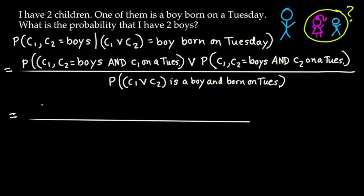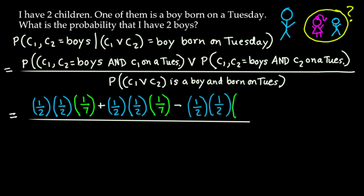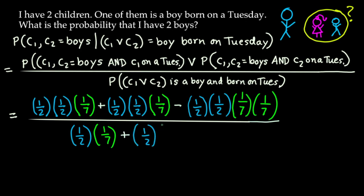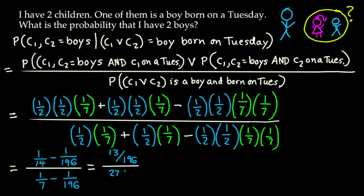The numerator: P(C1 is a boy) × P(C2 is a boy) × P(C1 born on Tuesday) = 1/2 × 1/2 × 1/7, plus the same 1/2 × 1/2 × 1/7, minus P(both boys and both born on Tuesday) = 1/2 × 1/2 × 1/7 × 1/7. The denominator: P(C1 is a boy born on Tuesday) = 1/2 × 1/7, plus 1/2 × 1/7, minus 1/2 × 1/2 × 1/7 × 1/7. Simplifying all of this gives 1/14 − 1/196 in the numerator and 1/7 − 1/196 in the denominator, which equals 13/27.